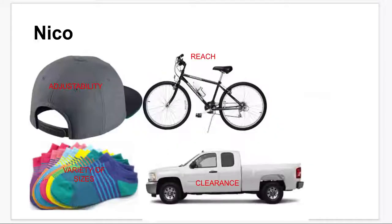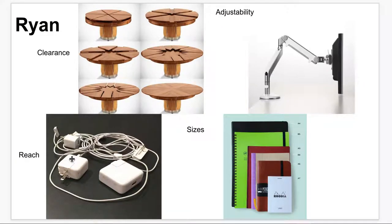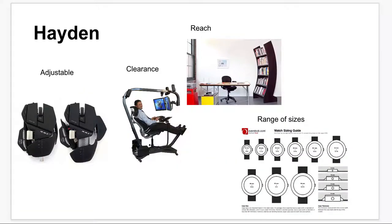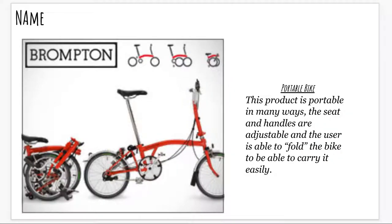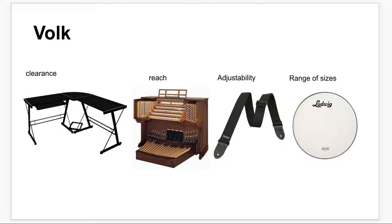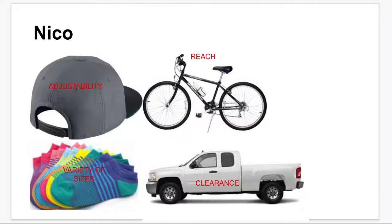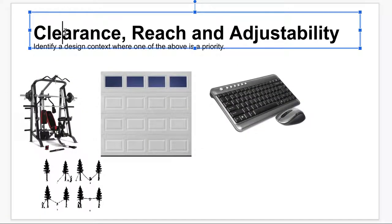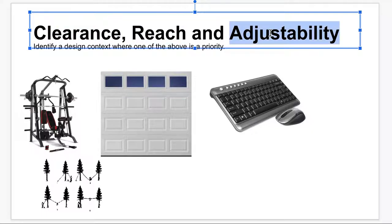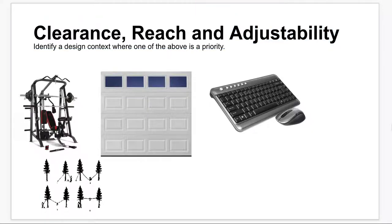A couple of other examples too — adjustable hats, you've seen these before. So it's understanding how to use those factors of clearance, reach, adjustability, and range of sizes. Your task on the form is about finding design contexts for clearance, reach, and adjustability, and saying why that is a priority in those specific designs. The definitions are pretty clear — what clearance is, what reach is, and what adjustability is — but remember it's those three specific things.